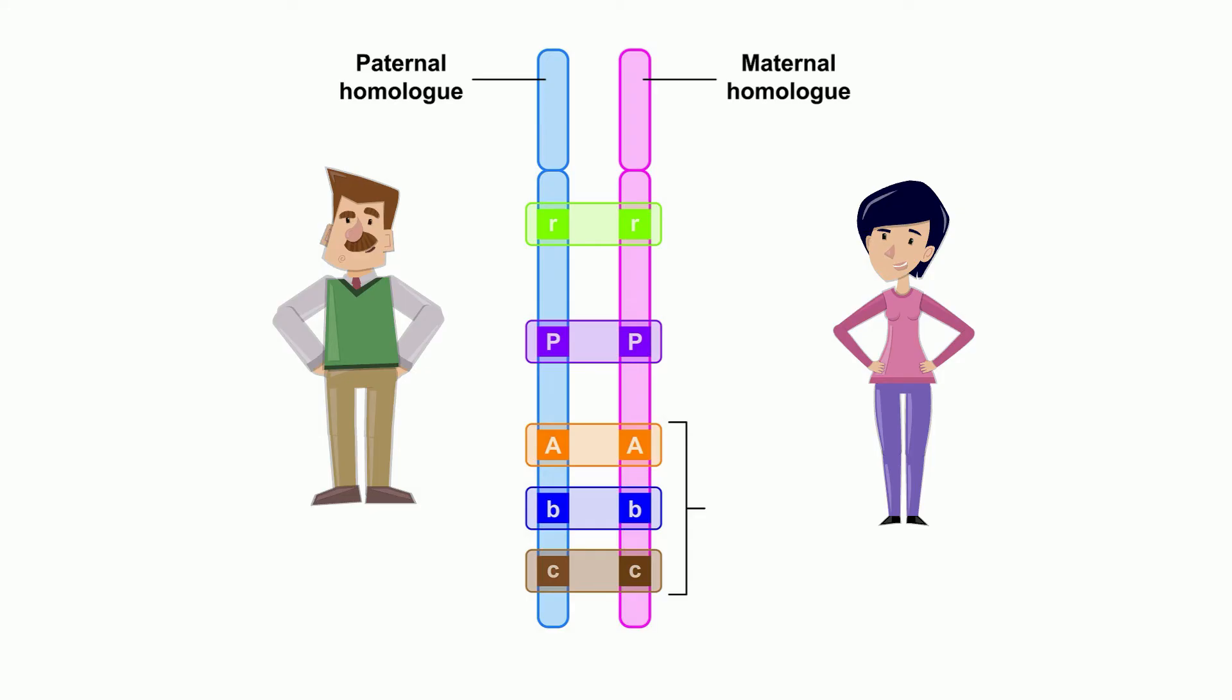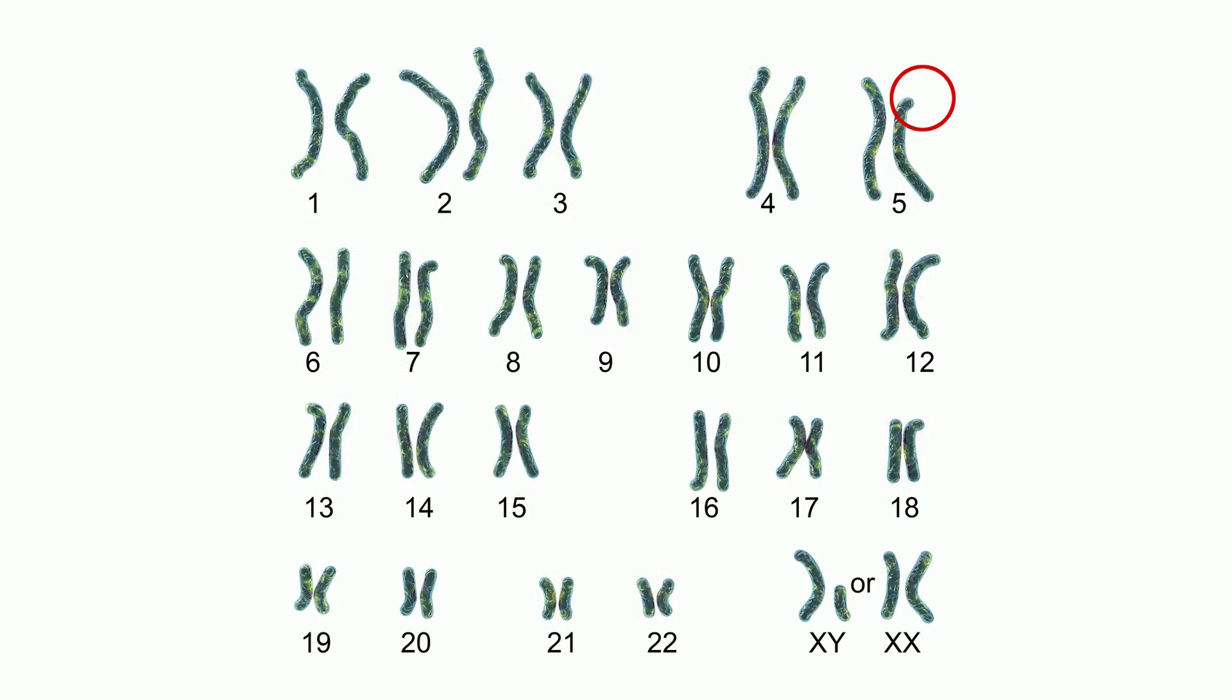An allele is a different form of the same trait. A karyotype is a picture of these homologous chromosomes. Humans have 23 pairs of these homologous chromosomes, or 46 total chromosomes.